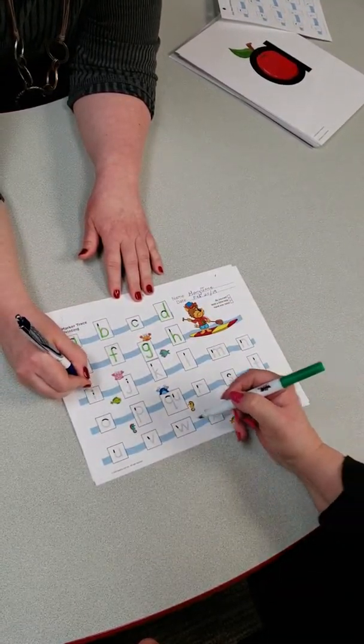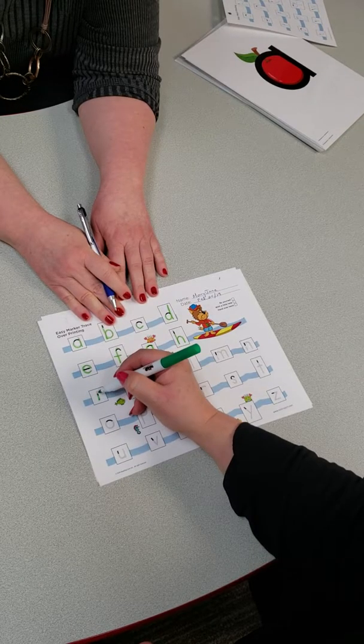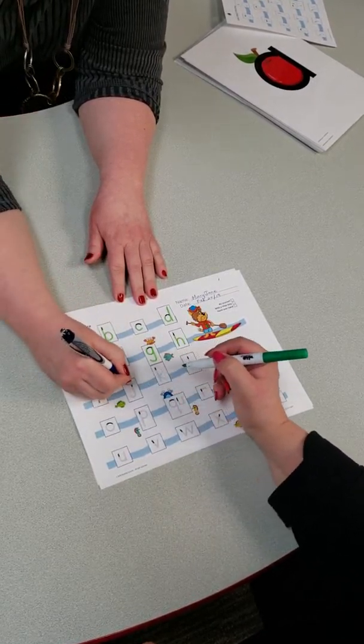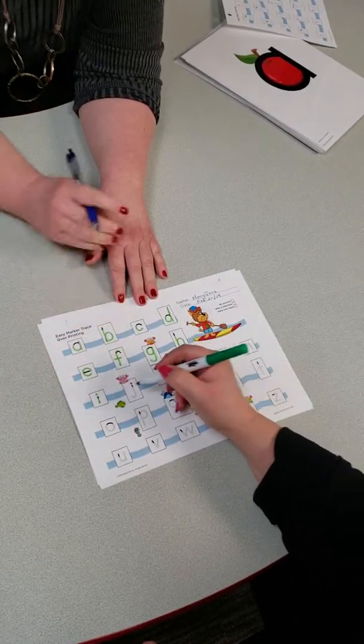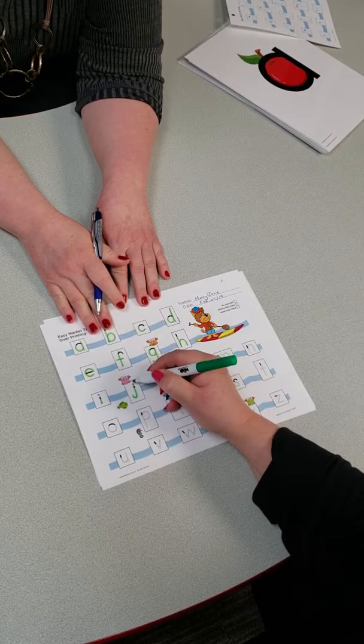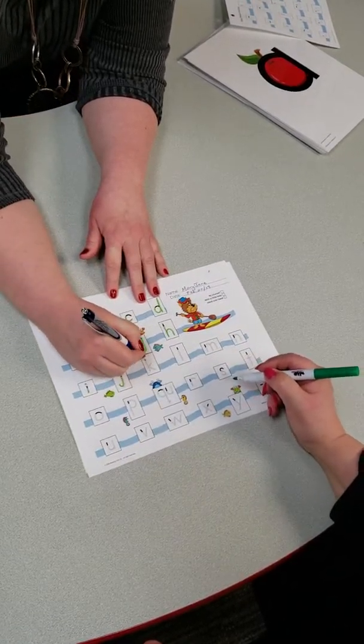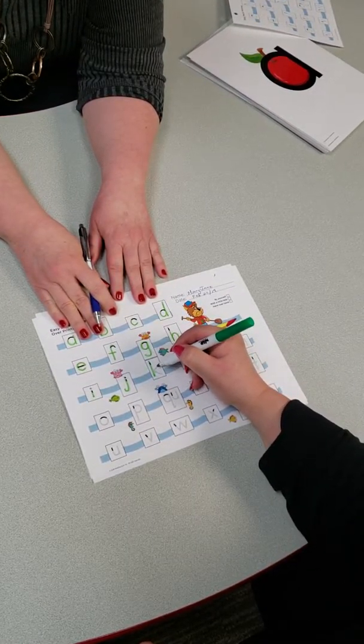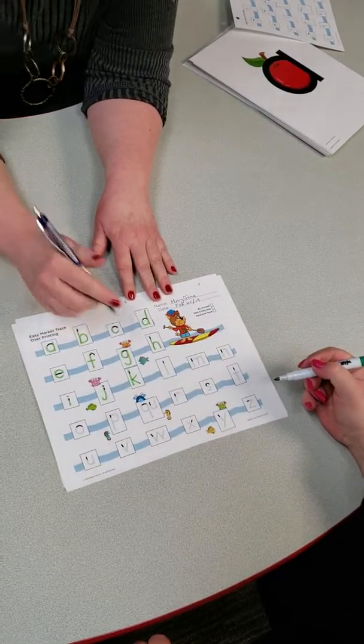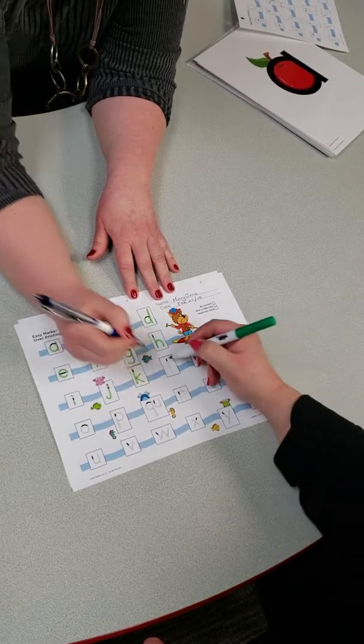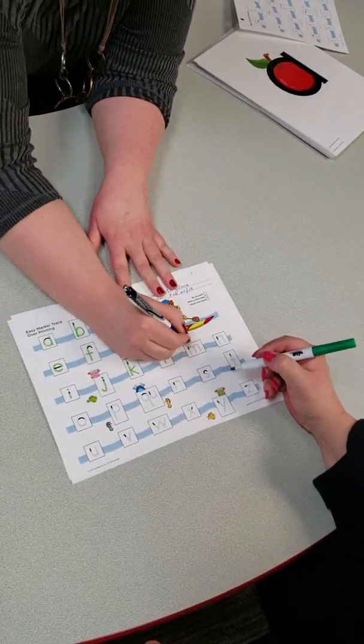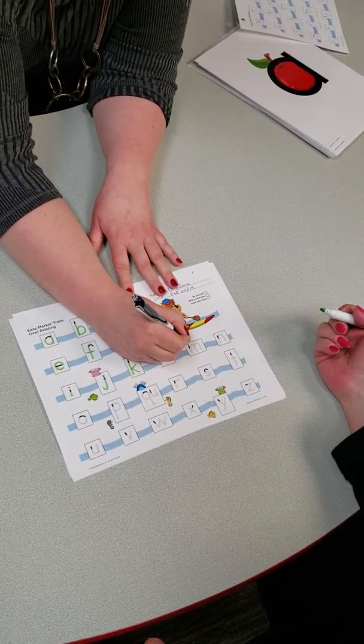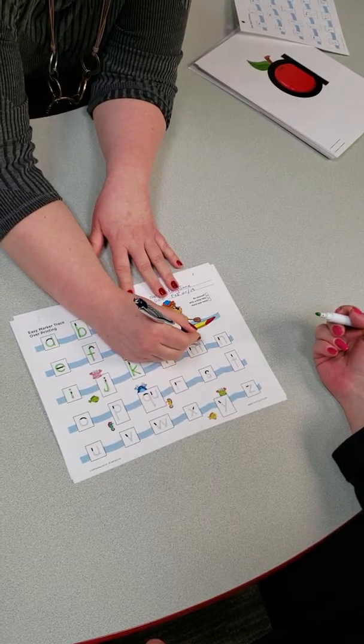I is for igloo. Remember to go down and then do the dot. Here comes the hard one—we're going to go down, kick in, kick out. Beautiful! This is just a stick. M is for mouse—watch first, down, hump, hump.